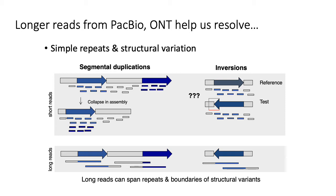Similarly, if you're looking at events like inversions, to detect an inversion in one individual's genome versus a reference, you need reads that span the inverted region as well as the flanking sequence. That's pretty hard with short read sequencing, so you might not detect that inversion event, but you'll be more likely to detect it with longer reads. Longer reads have major applications in helping to assemble genomes.